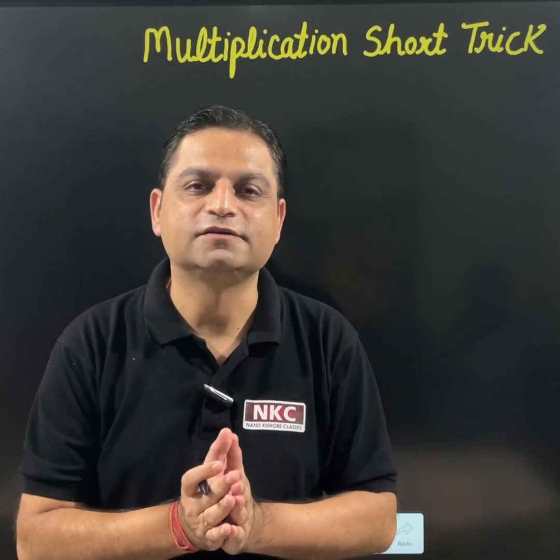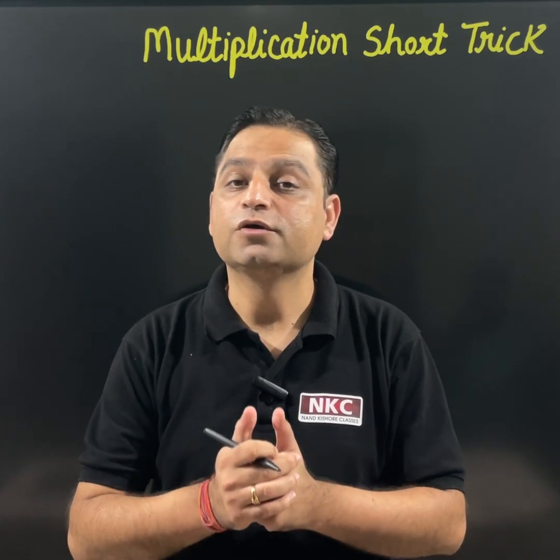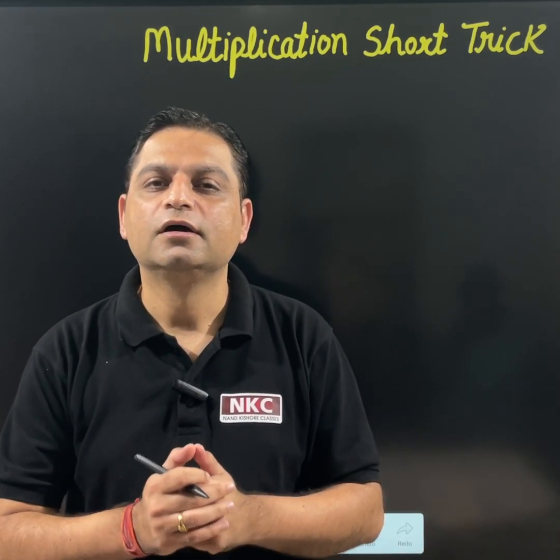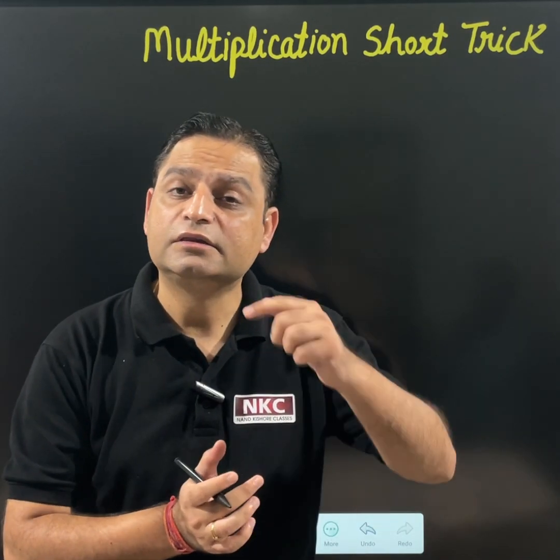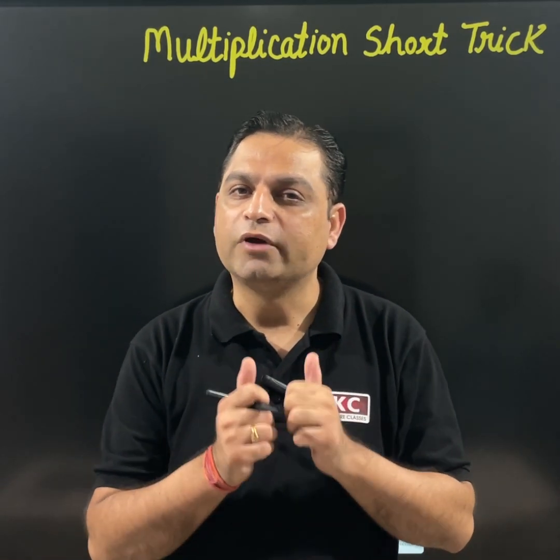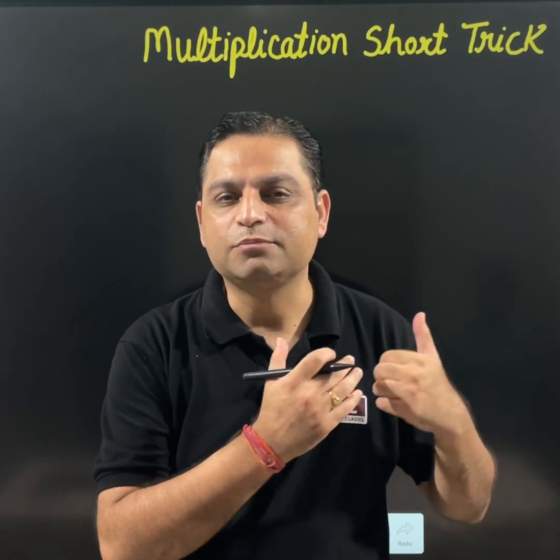Hello friends, welcome to Nankishore classes. Today's lecture is going to be very interesting because we are going to learn a very important multiplication shortcut trick where three digit numbers we can multiply, provided the middle term is 0. Let us see these special type of questions.